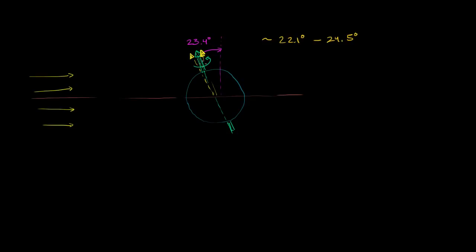This change has some impact, but it takes a long period of time — 41,000 years to go from minimum tilt to maximum tilt and back again. Right now, at 23.4 degrees, we're right in between. We think the last maximum was around 8700 BCE, and the next minimum will occur around the year 11,800. So this isn't something happening overnight, but it can affect our climate over long periods of time.